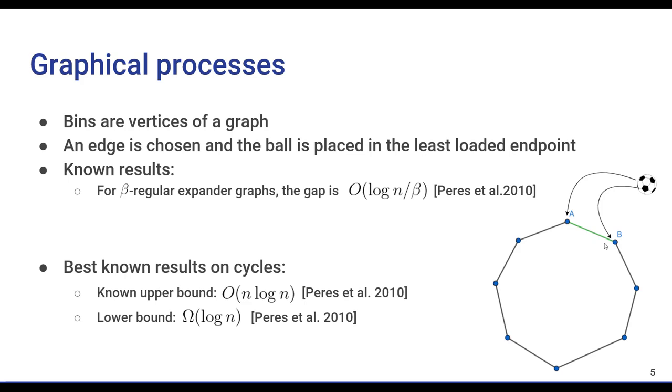Also, some of the same techniques were used on a cycle to achieve an upper bound of big O of n log n and a lower bound of omega log n. Closing this gap between the upper and lower bound estimates for cycle graphs is known to be a challenging problem.